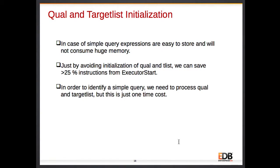Apart from push-down scan key, the next experiment is qualification and target list initialization done in executor start. Instead of doing this initialization every time, we just do it once, store it along with the plan statement in a cached memory context, and reuse it for the next time. We store the expression within the cached memory context, switch the memory context, do the allocation there, and directly pass the reference stored along with the name statement for the prepared query. By this experiment I could save almost 25% of executor start instructions.